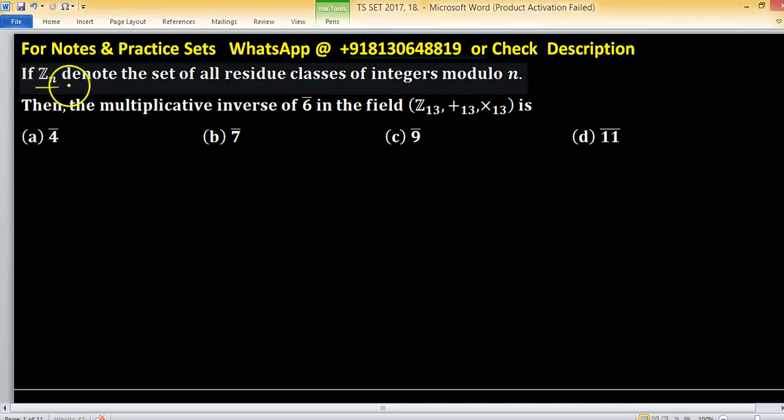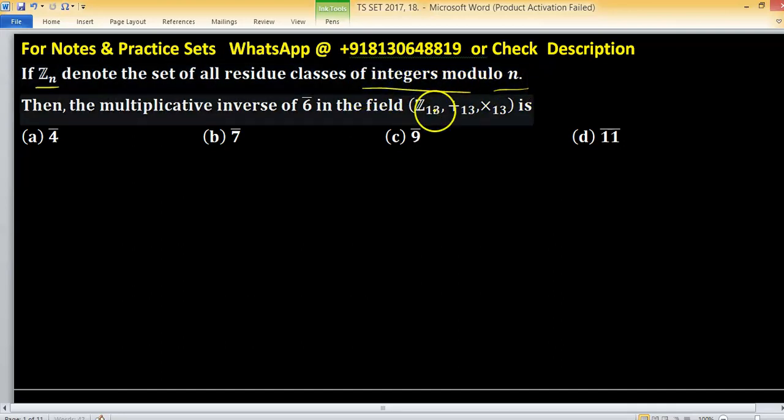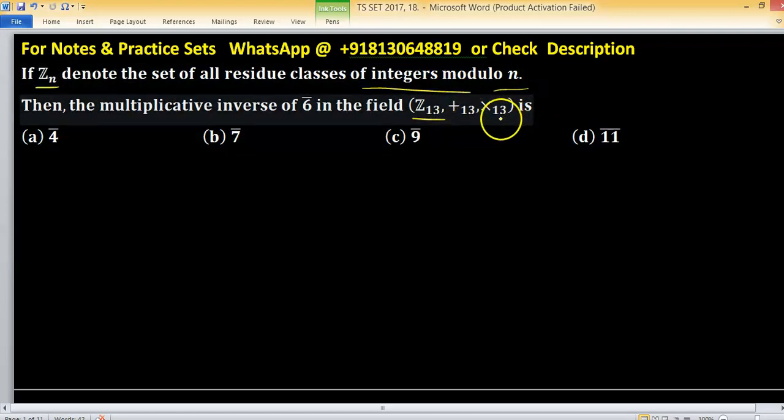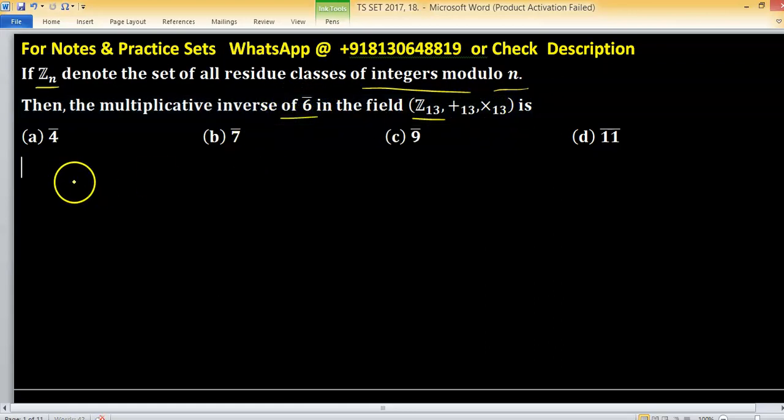In this problem, Zn denotes the set of all residue classes of integers modulo n. Z13 with respect to addition modulo 13 and multiplication modulo 13, we have to find the inverse of 6 bar. 6 bar is a residue class of 6, or you can easily say equivalence class of 6.